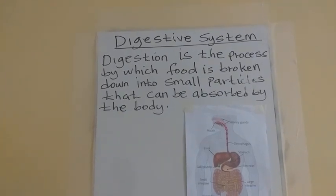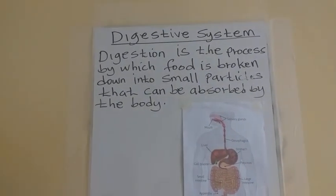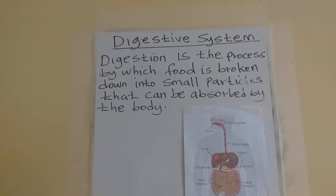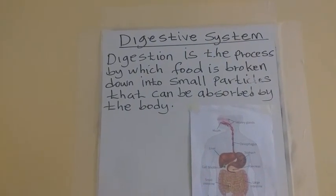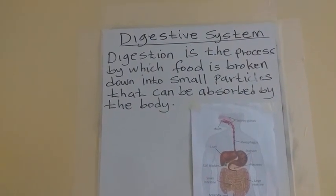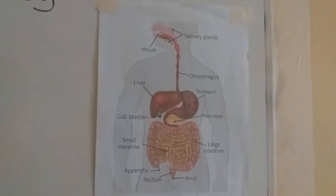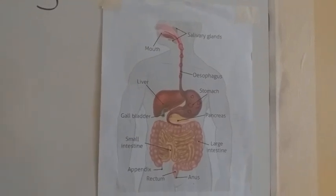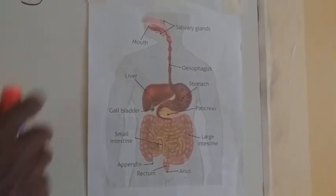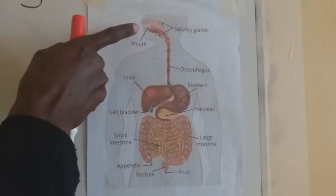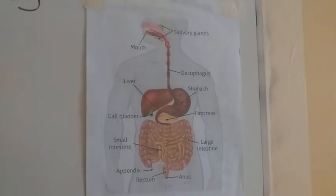Now we are going to use these charts to explain the process of digestion. We are going to start from the mouth, because digestion always starts from the mouth to the anus.